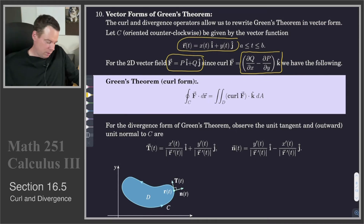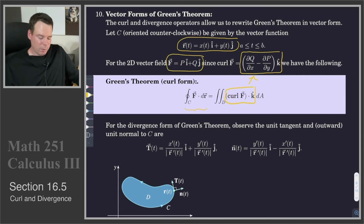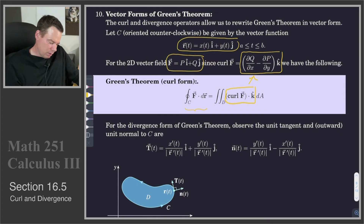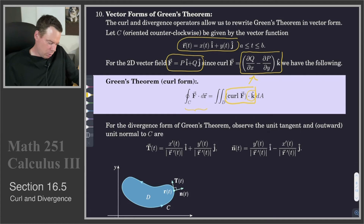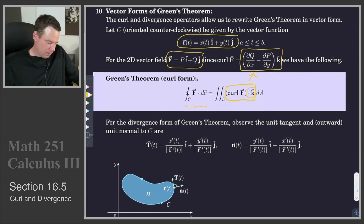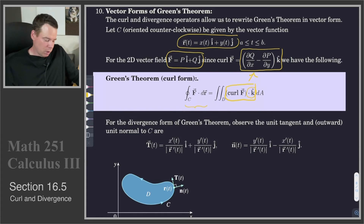Rewriting Green's Theorem: the left-hand side is the line integral, and the right-hand side, dQ/dx minus dP/dy, is precisely the curl dotted with k-hat. So the curl form of Green's Theorem says the line integral equals the double integral of the curl of the vector field dotted with k-hat. We dot with k-hat just to pull off that third component, dQ/dx minus dP/dy. This doesn't really help us use Green's Theorem differently — it's just another way of phrasing it using the terminology of curl.